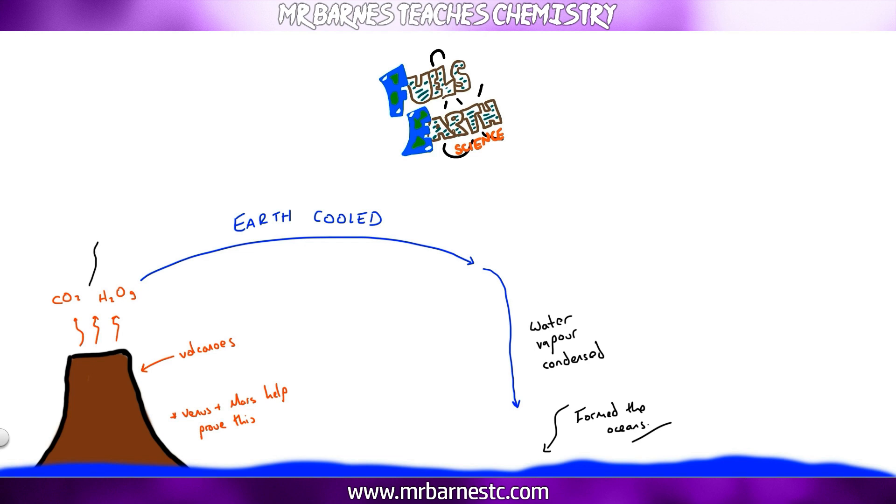Was there any oxygen present in the early atmosphere? We don't think so. Reason for that? Volcanoes do not produce oxygen. And also, in ancient rocks there's something called iron pyrite. Now that is something that only exists when there is no oxygen present. So we're fairly confident there was no oxygen in the early atmosphere.